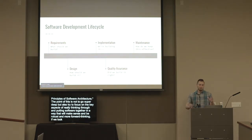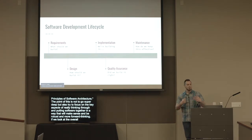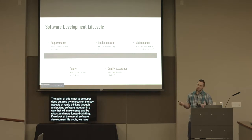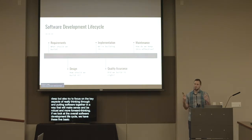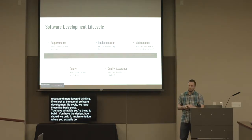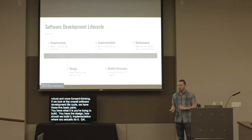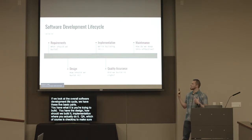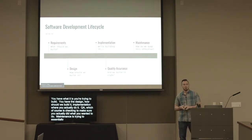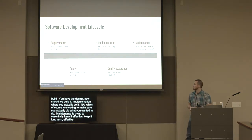If we look at the overall software development lifecycle, we have five basic parts: requirements — what is it that we're trying to build; design — how should we build it; implementation — where you actually do it; QA — checking to make sure you actually did what you wanted to do; and maintenance — keeping it long-term effective for the client.